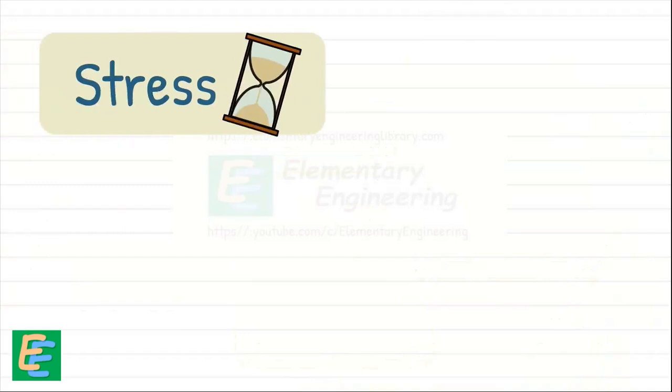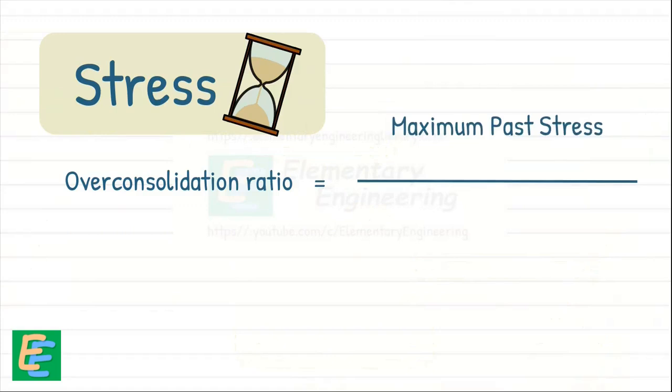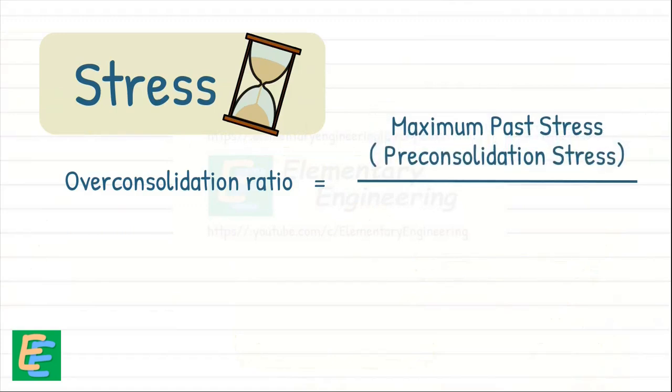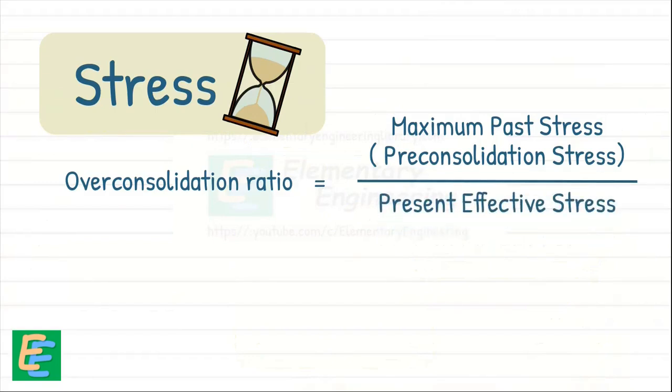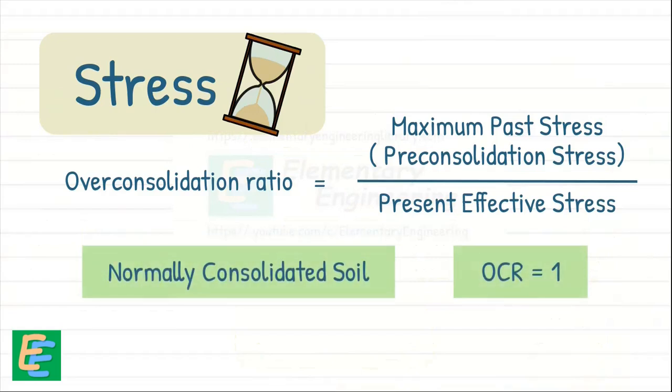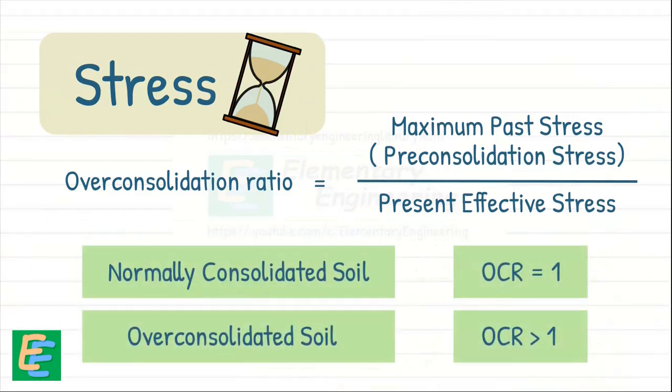This stress history is often quantified using the concept of over consolidation ratio, which compares the maximum past stress on the soil, called pre-consolidation stress, to the current effective stress. Soils can be classified as normally consolidated or over consolidated based on their stress history and OCR.